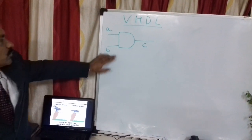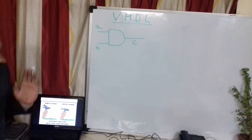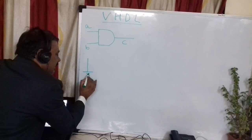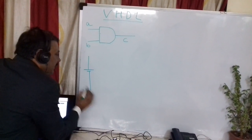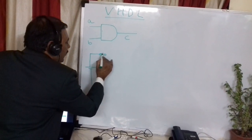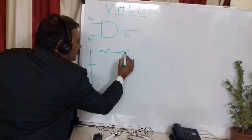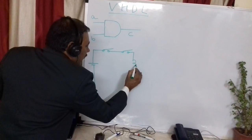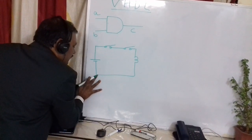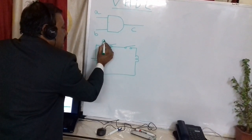If you want to realize this AND operation, you can take a simple electrical circuit. There is a battery, a switch A, a switch B, and a lamp. This is a very simple electrical circuit.